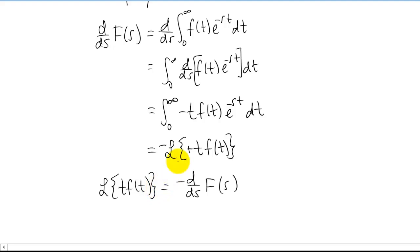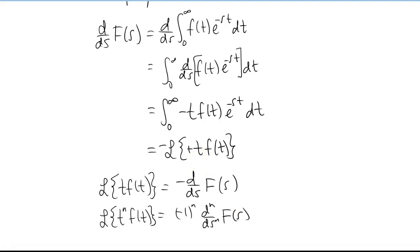This concept can be expanded: every time we take a derivative with respect to s of the Laplace transform, we pull down a factor of negative t in the integral. This gives us a general formula saying that you can multiply a function by t n times, and the Laplace transform of t^n·f(t) is the same as taking n derivatives of F(s), with a possible negative sign depending on whether n is even or odd.